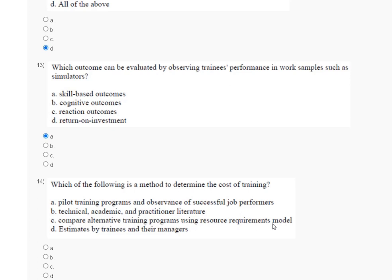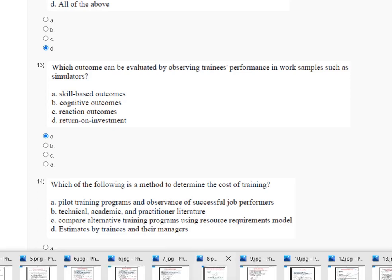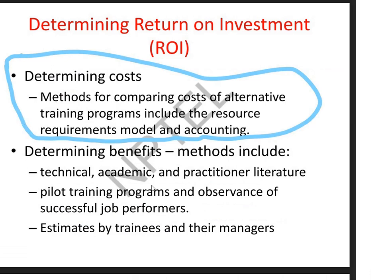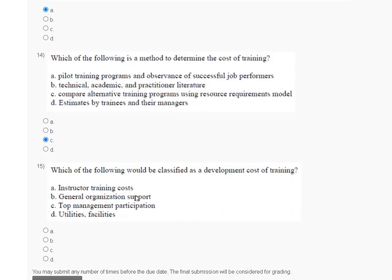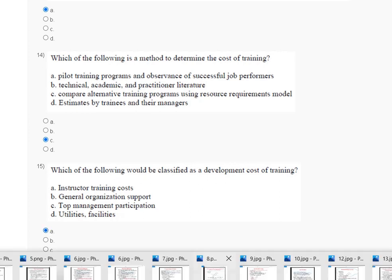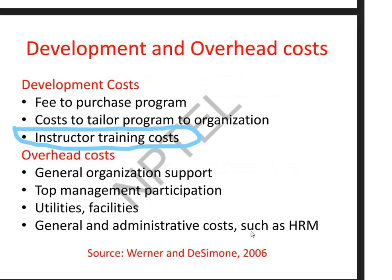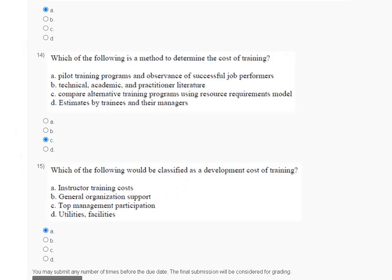The correct answer is Option C — compare alternative training programs using a resource requirement model. Here is the explanation of question number 14. Question number 15: which of the following would be classified as a development cost of training? The correct answer is Option A — instructor training cost. The explanation of question number 15 is here. Thank you, guys.